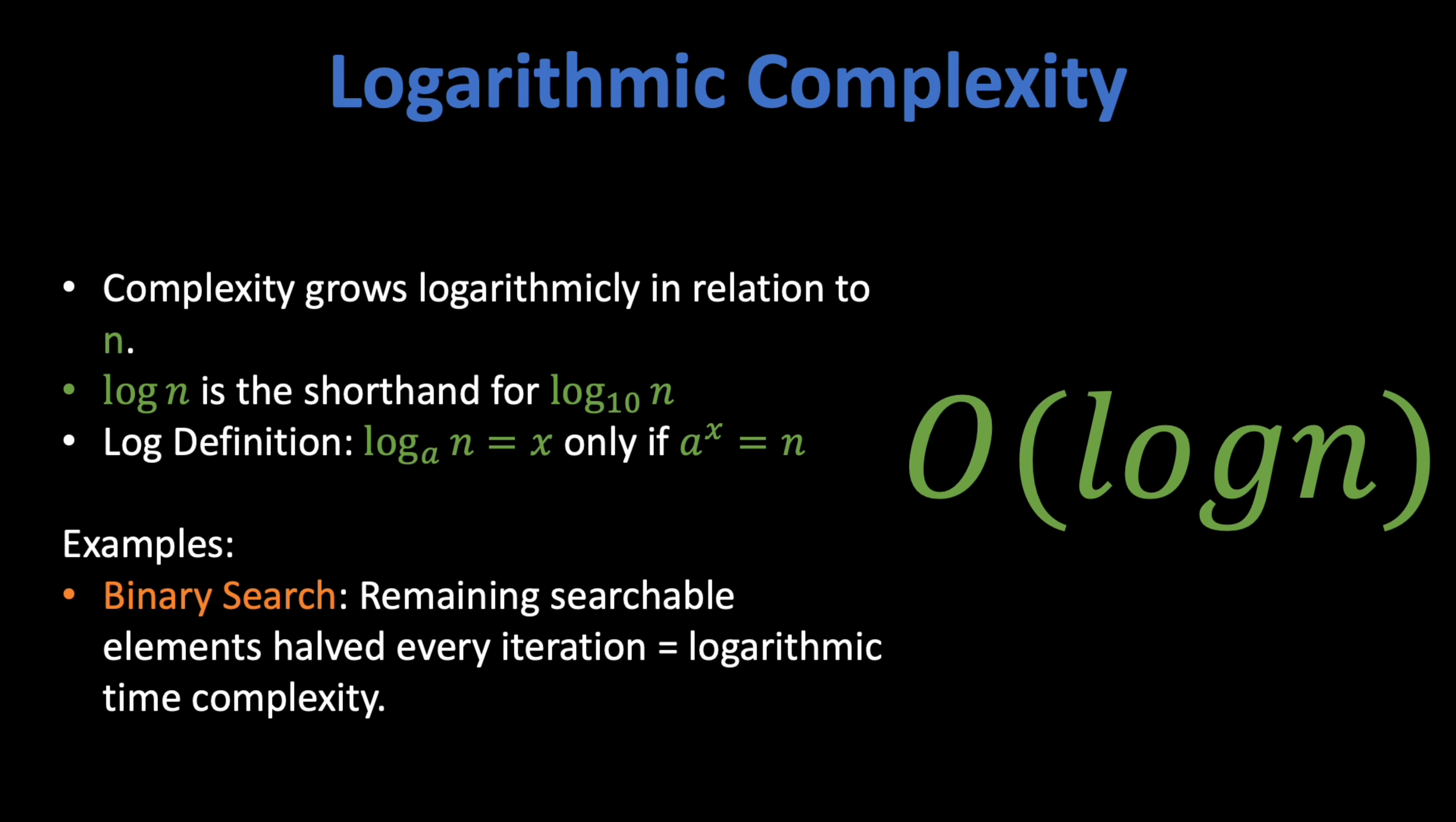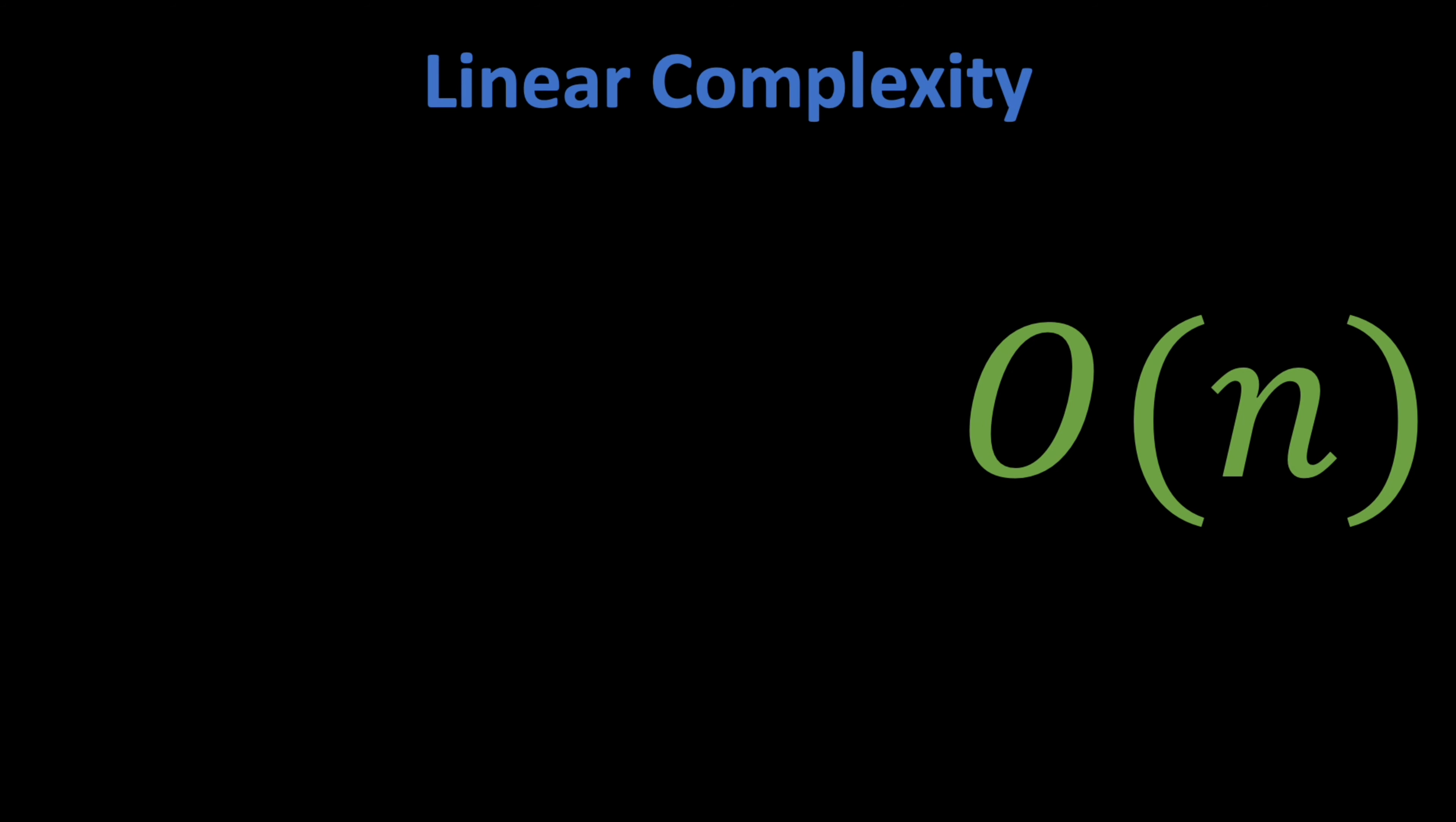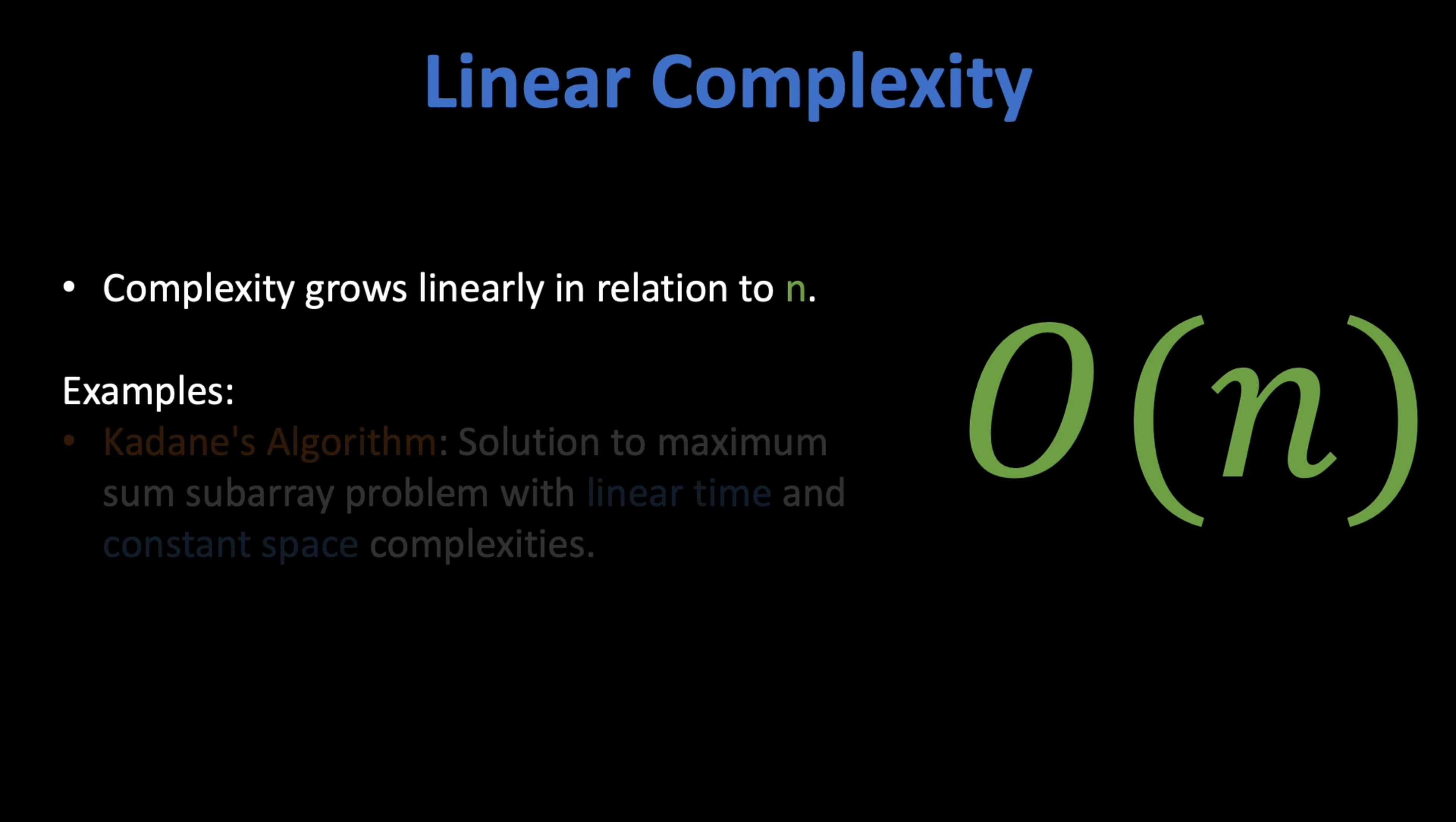Linear complexity, O(n). This is yet another straightforward complexity type. If an algorithm's time space usage only grows linearly with the number of elements in the input, then it has linear time space complexity.